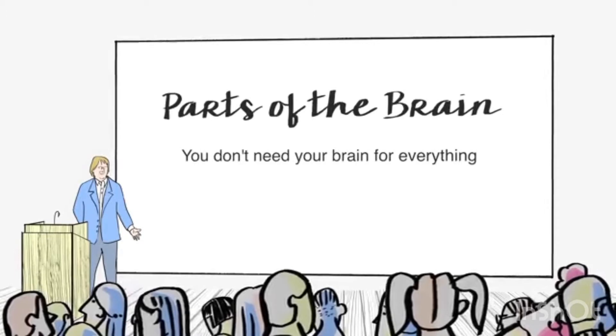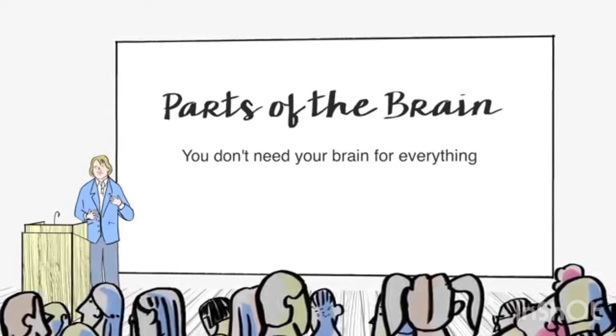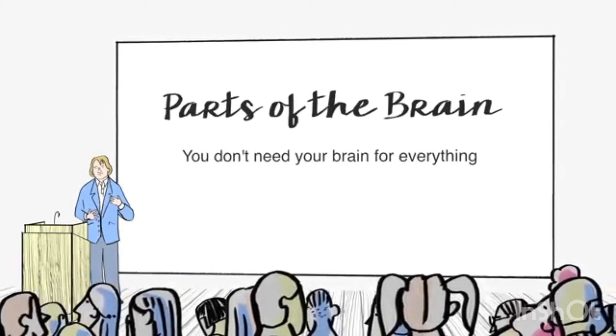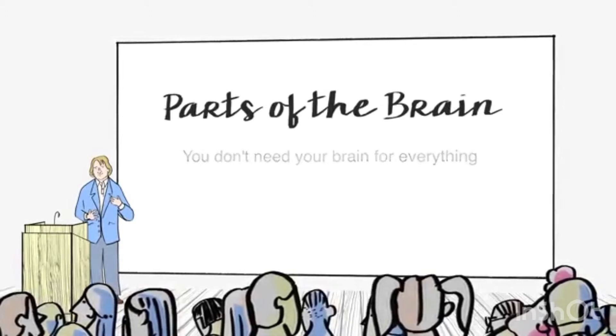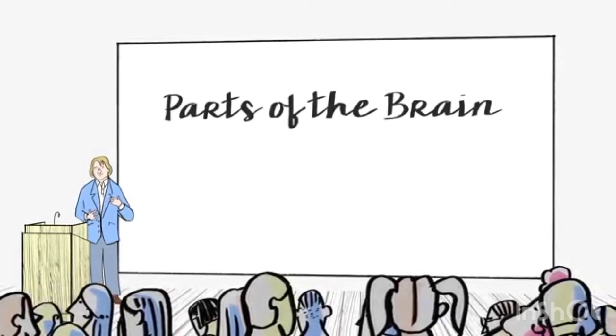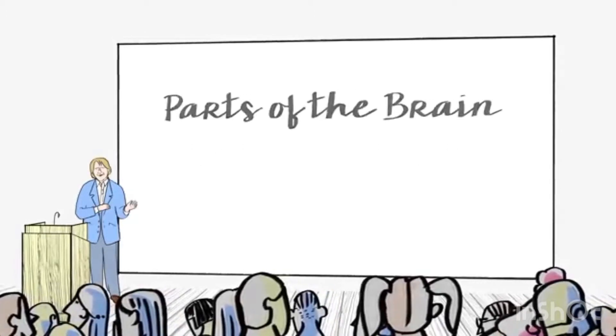Some of the structures of the brain are called subcortical, which means that they're below the cortex, in the center of the brain.